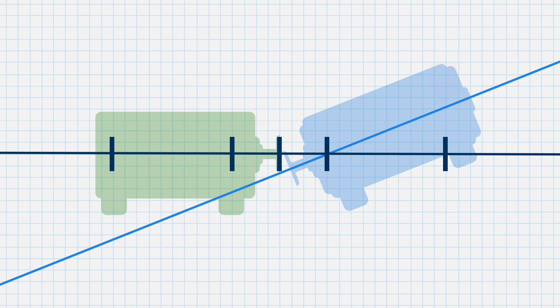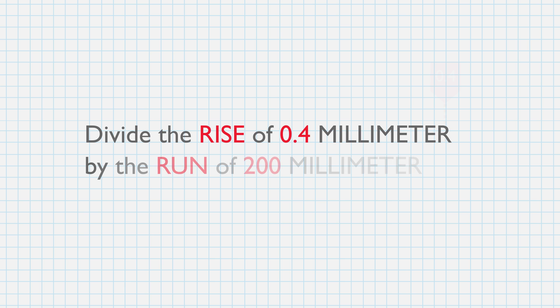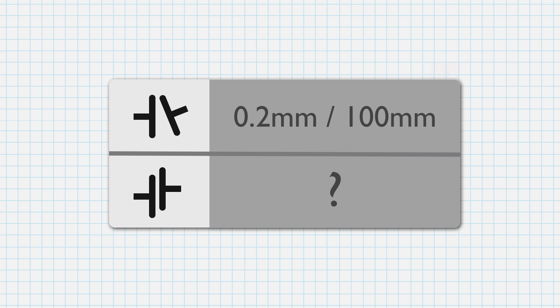From the graph, we can see that the shaft rises 0.4 mm between the front and back feet of the motor. The distance between the front and back feet of the motor is 10 blocks across, or 200 mm. Divide the rise of 0.4 mm by the run of 200 mm to get the angularity, which is 0.2 mm by 100 mm.